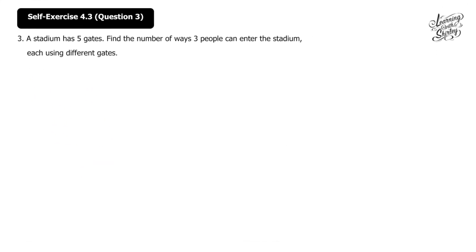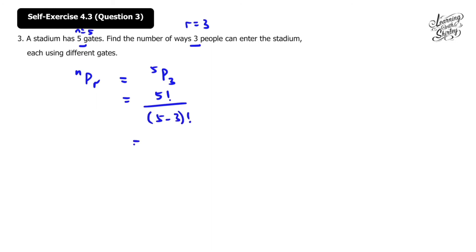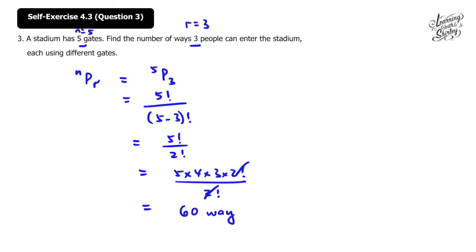Let's look at question 3, which is very similar to question 2. A stadium has 5 gates. Find the number of ways 3 people can enter the stadium each using different gates. We use nPr where n equals 5 and r equals 3. So 5P3 equals 5 factorial over (5 minus 3) factorial, equals 5 factorial over 2 factorial, equals 5 times 4 times 3 times 2 factorial over 2 factorial. We cancel top and bottom, so equals 5 times 4 times 3 equals 60. The answer is 60 ways.